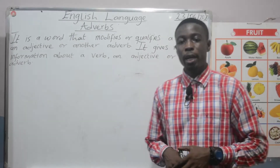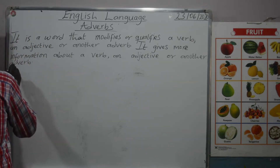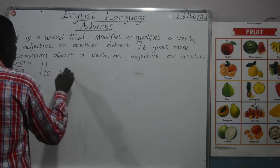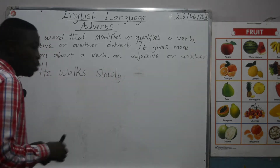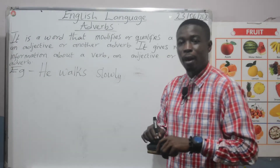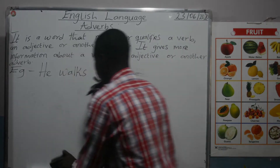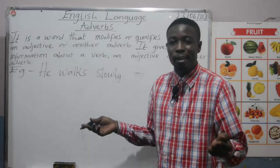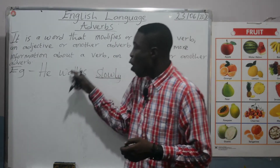Let's give some examples as to how it gives more information. Example: 'He walks slowly.' What is the verb or action in this sentence? The action is 'walks.' How is it done? How is the walking done? Slowly. So, 'slowly' here is telling us more about the walking.